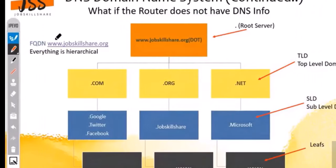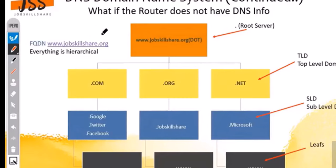Using the example of jobskillshare.org — which is also known as an FQDN, a Fully Qualified Domain Name — if the host computer does not have information and the router does not have any information, then when you type www.jobskillshare.org, every URL has a dot at the end which is invisible...